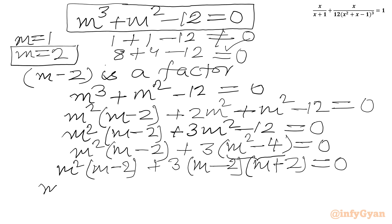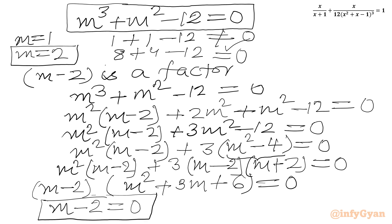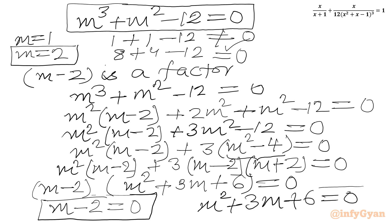Now m minus 2 is common, so we factor it out. We get m minus 2 times (m squared plus 3m plus 6) equal to 0. From here we conclude either m minus 2 equals 0, or the quadratic m squared plus 3m plus 6 equals 0.